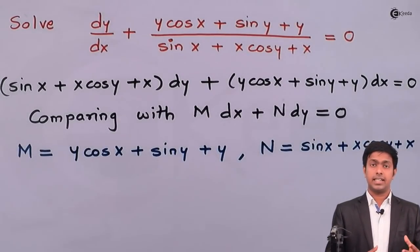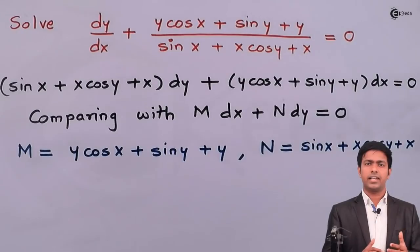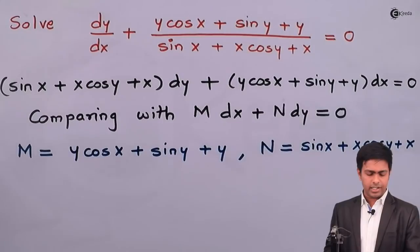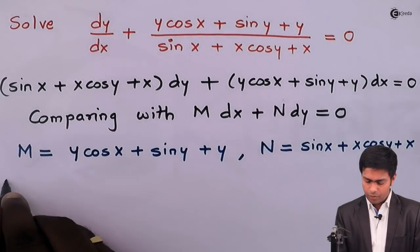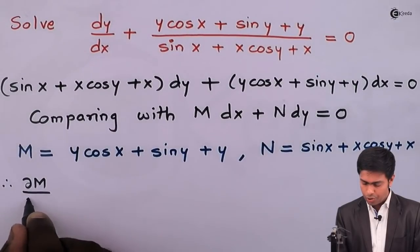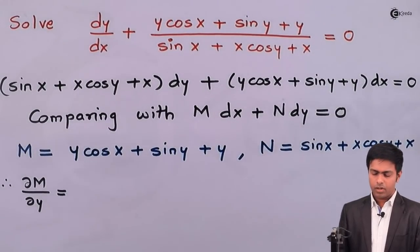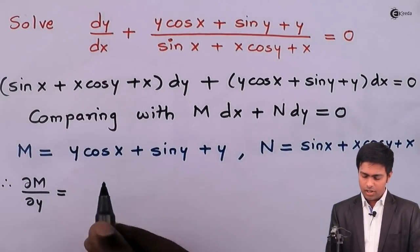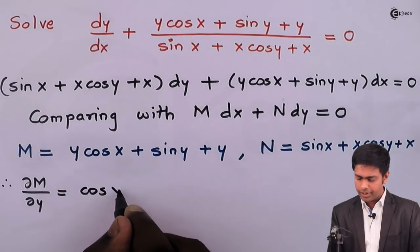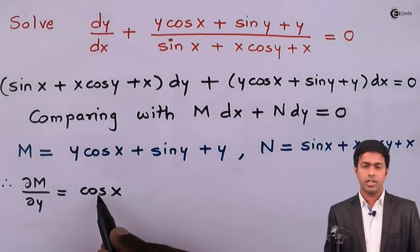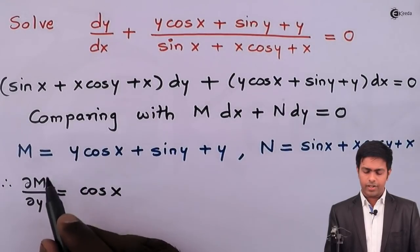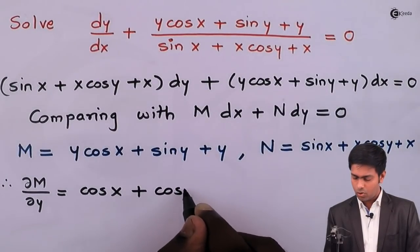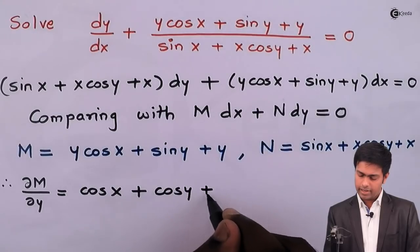To prove the given differential equation is exact, we have to prove that ∂M/∂y = ∂N/∂x. So let's find ∂M/∂y: partially differentiating M with respect to y, cos x is treated as constant, so we get cos x · 1 + cos y + 1.